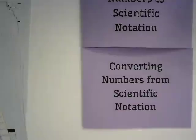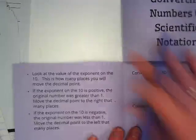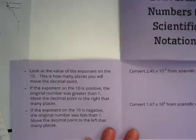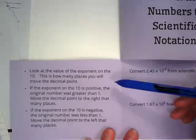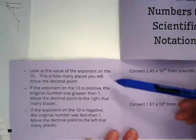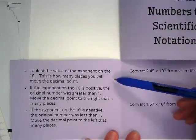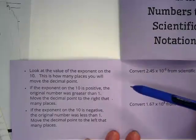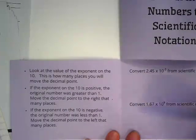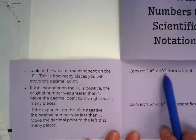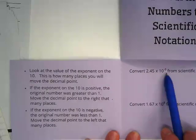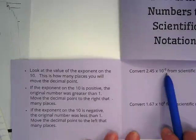Next flap is converting numbers from scientific notation. So let's open that one up. I'm just going to read through these and then we'll do two examples. Look at the value of the exponent on the 10. This is how many places you will move the decimal point. So this exponent is really important. It's telling us what we're going to move.